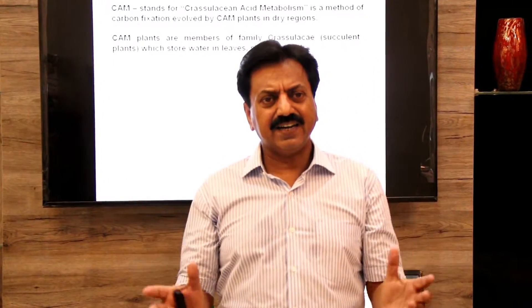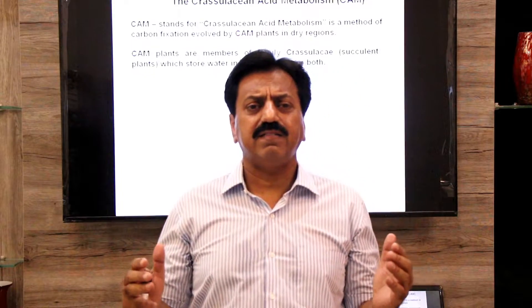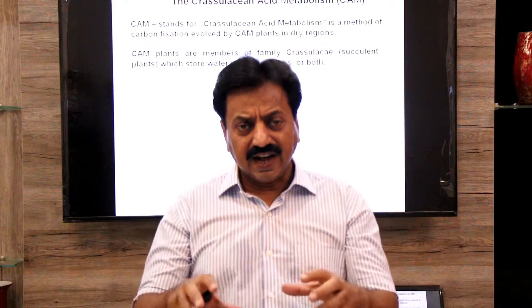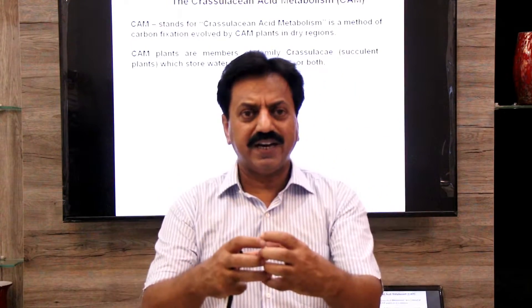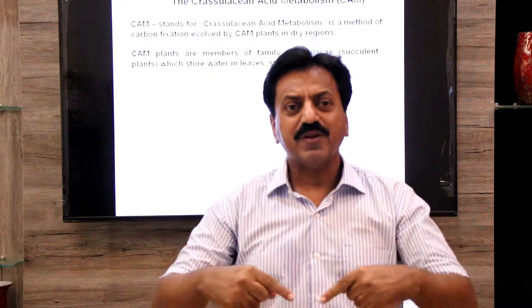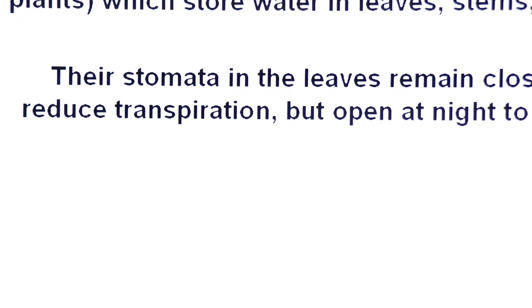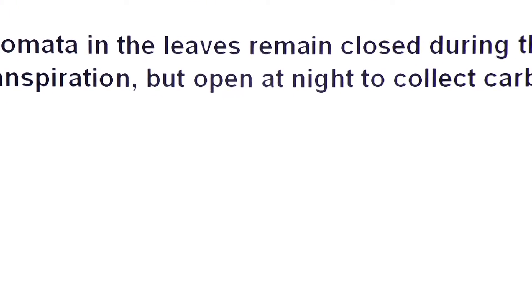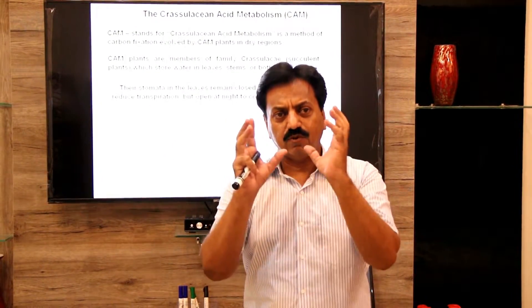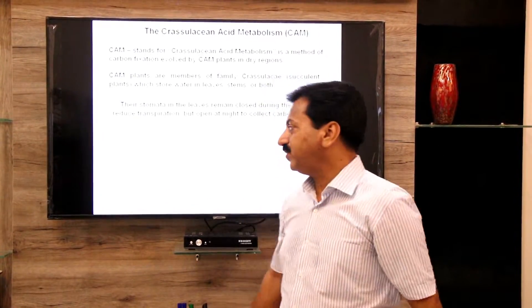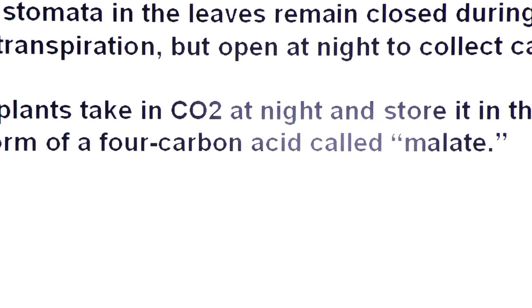CAM plants are plants of dry desert areas; they are also called succulent plants because their stems are fleshy and they store water. They have an alternative mechanism of carbon dioxide fixation: they open their stomata at night to collect carbon dioxide, and during the day they close their stomata to reduce water loss. The carbon dioxide collected at night is used during the day to run the Calvin cycle. Their stomata and leaves remain closed during the day to reduce the rate of transpiration, but open at night to collect carbon dioxide.